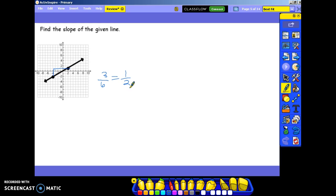If you wanted to do it by the points, you have negative 4, negative 2, and 2, 1. You would subtract your y's over your x's. 1 minus negative 2 is 3, 2 minus negative 4 is 6, and that simplifies to one-half.